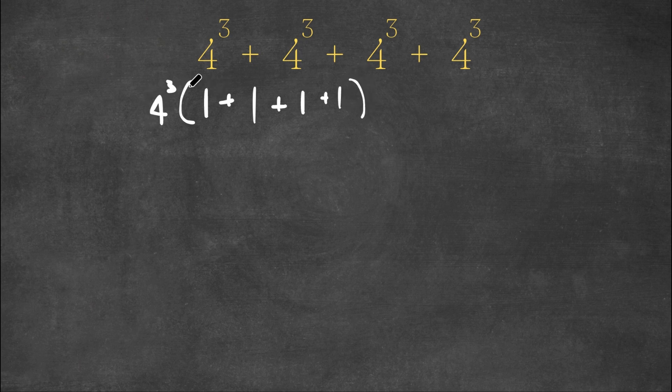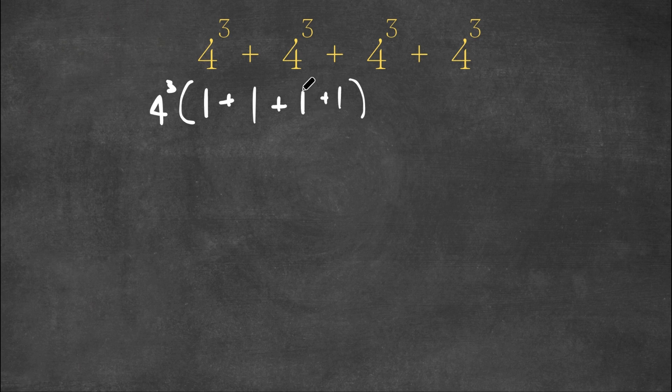So now we have 4 to the power of 3 times 1 plus 1 plus 1 plus 1. Now let's simplify what's in the parentheses. What's 1 plus 1 plus 1 plus 1? 4.